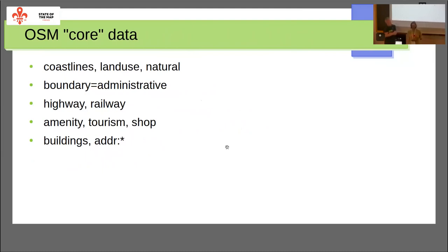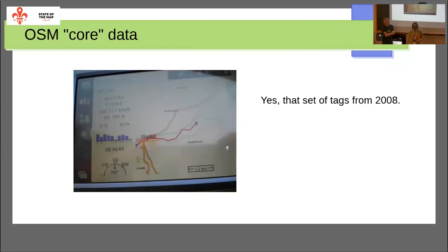That means we have basically a set of core data in OSM in terms of tagging: some landuse like coastlines, natural water, boundaries, highways, railways, amenities, buildings, and addresses. If you think about it, that's pretty much the map I showed at the beginning from 2009 — it's much more complete, but the set of tags which most users use has not changed a lot. That's an interesting first conclusion: these are the tags we really have to be careful about. We shouldn't be changing them, because that is what people rely on.